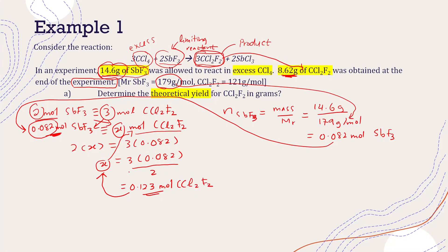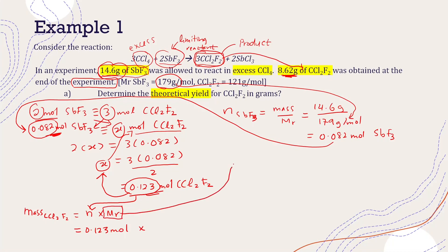The theoretical yield must be expressed in mass — in grams or kilograms — not in moles. So you need to find the mass of CCl2F2, which you calculate as: number of moles times molar mass. So 0.123 moles times the molar mass of CCl2F2, which is 121 grams per mole, gives 14.883 grams. This is the theoretical yield.